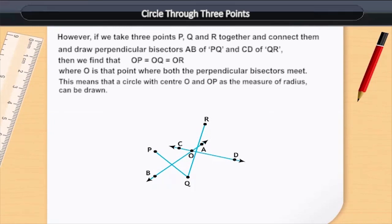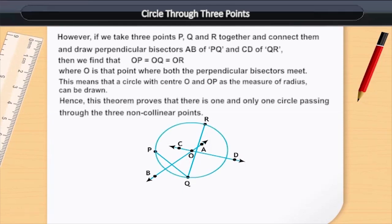This means that a circle with center O and OP as the measure of radius can be drawn. Hence, this theorem proves that there is one and only one circle passing through the three non-collinear points.